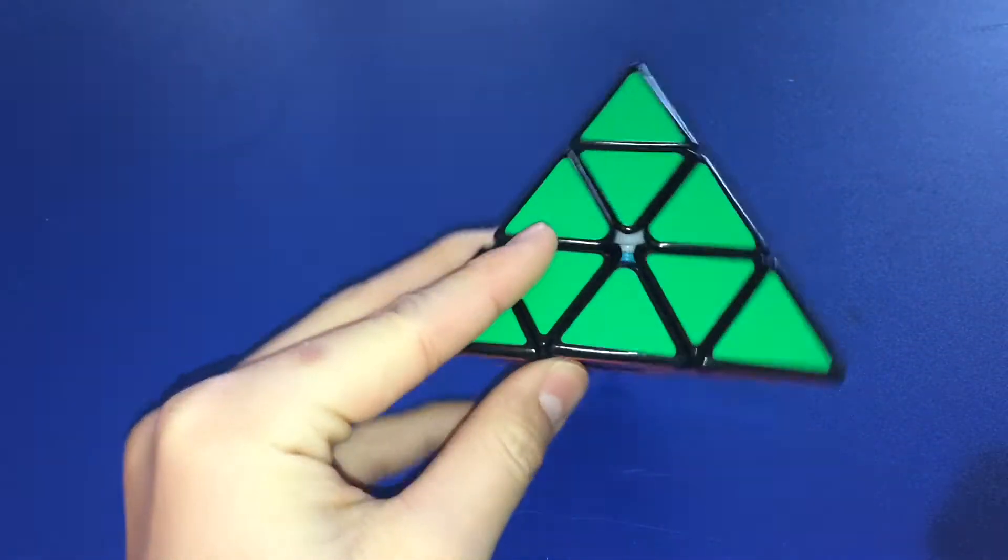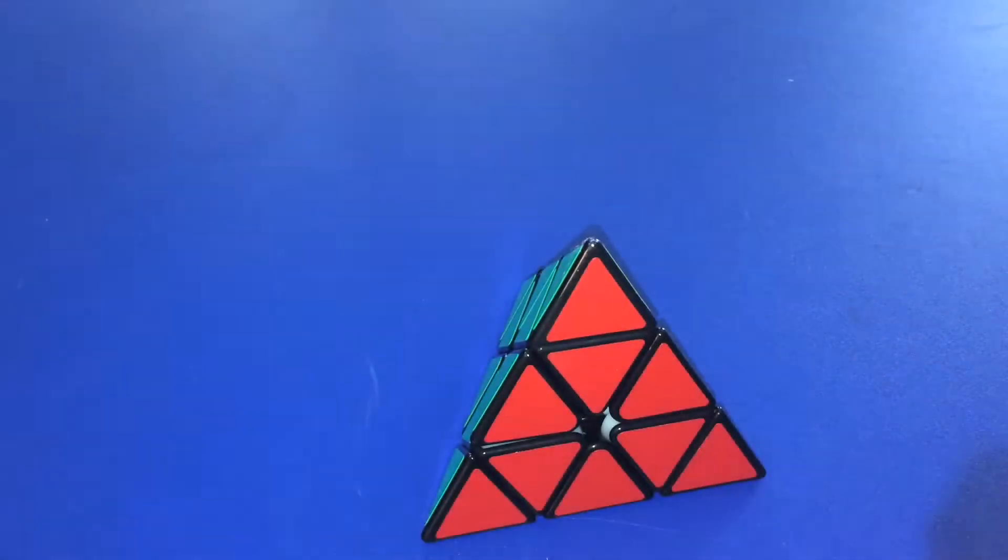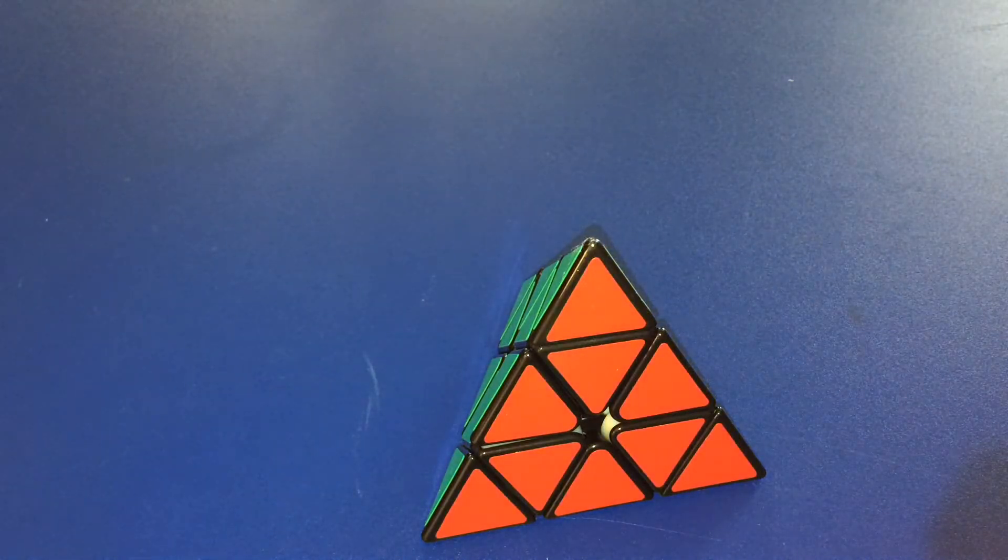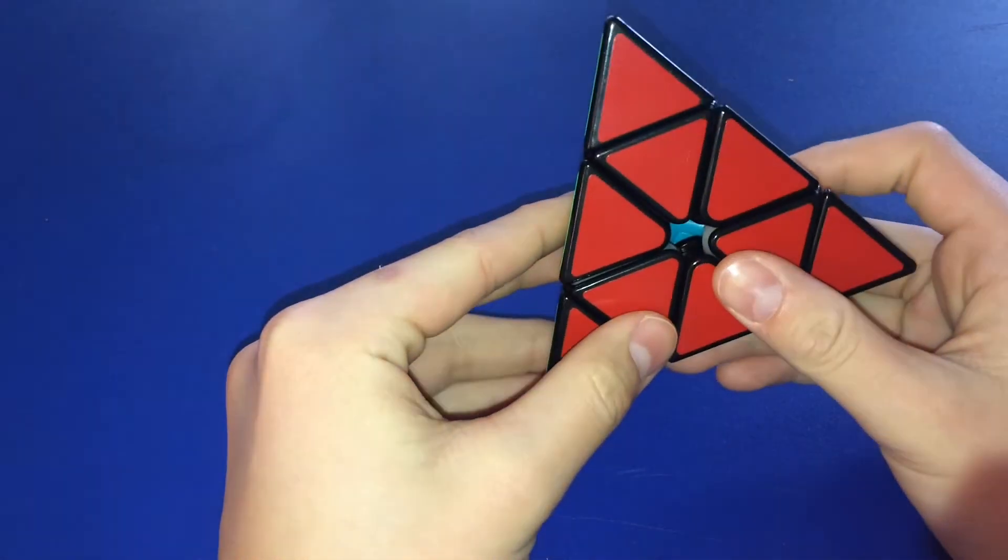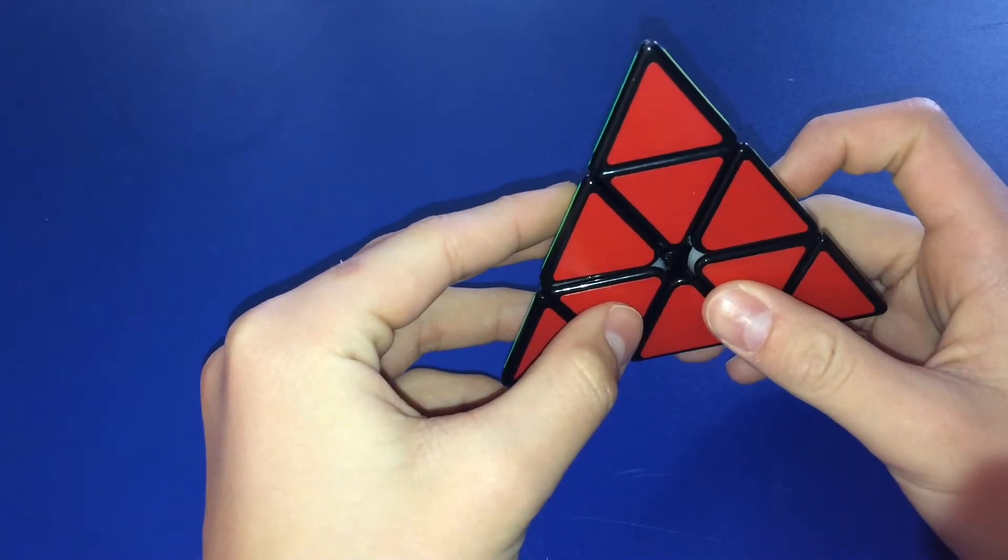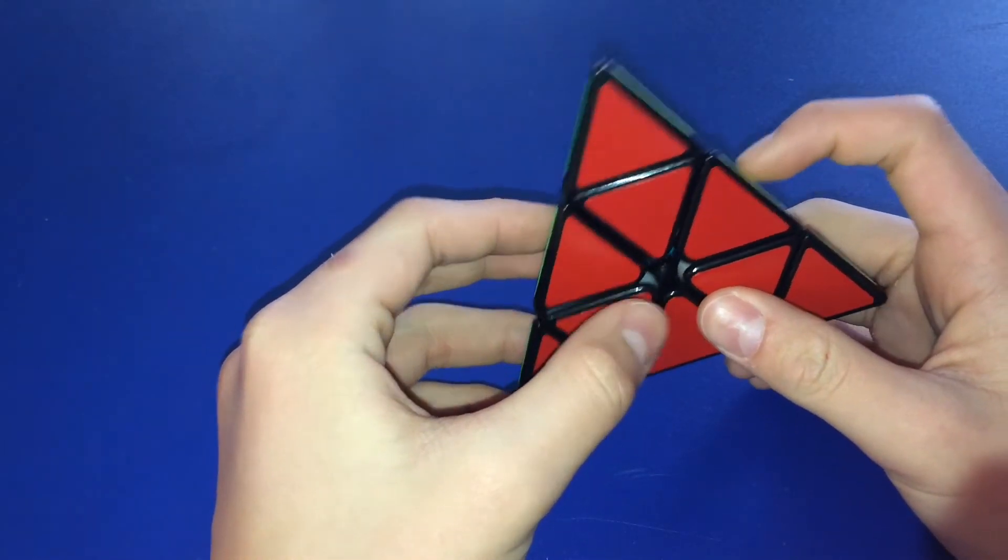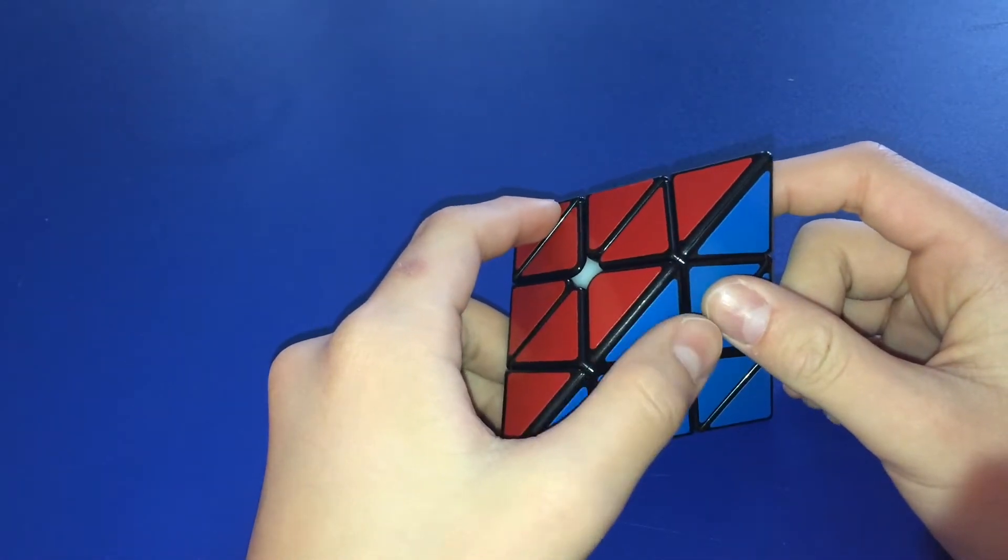Wow, this is like a Rubik's Cube, but it's in the shape like a pyramid. I wonder what the name is. It's like a pyramid. Is this the Rubik's Triangle?